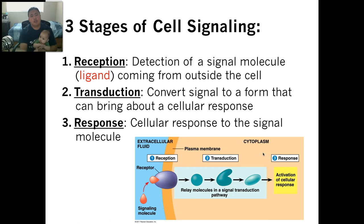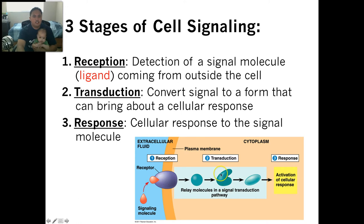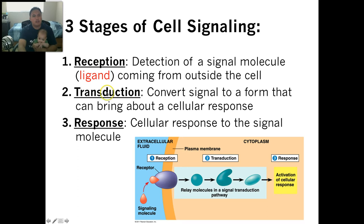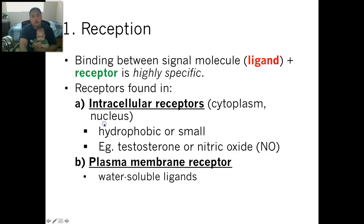The three stages are: receiving the message, relaying the message, and doing something once you get the message. When you get a message, that's called reception. When you convert the signal, when you relay the message, that's called transduction. And when you do something, that's called the response.